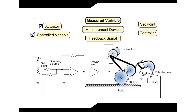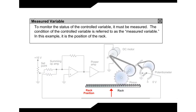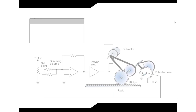Measured Variable: To monitor the status of the controlled variable, it must be measured. The condition of the controlled variable is referred to as the measured variable. In this example, it is the position of the rack.